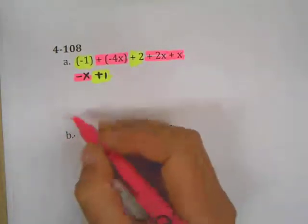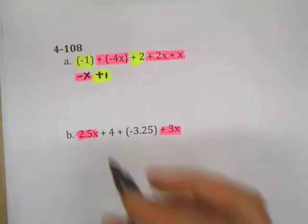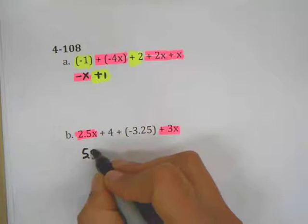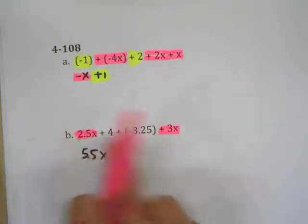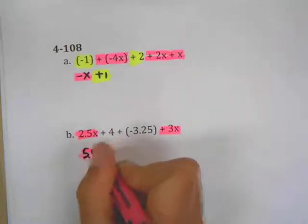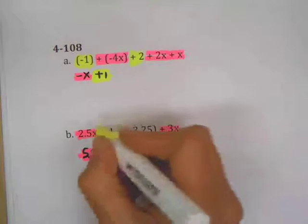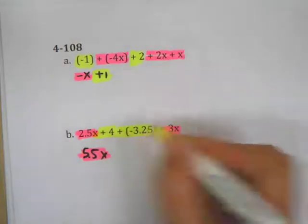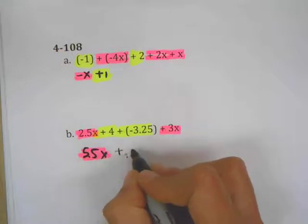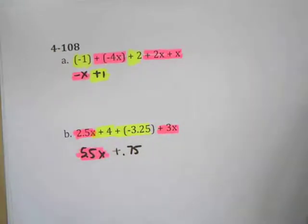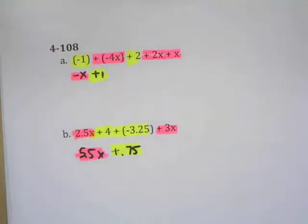Over here, starting with the variables first: two point five x plus three x gives me five point five x — you just deal with the coefficients, two point five plus three. With the regular numbers or constants, plus five and negative three point five — I have a little more positive than negative, specifically by point 75, giving a constant of point 75. So that expression simplifies to five point five x plus point 75.